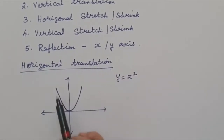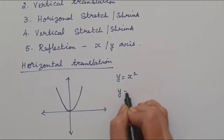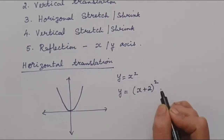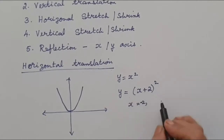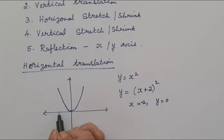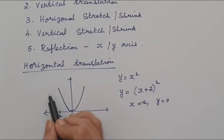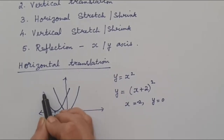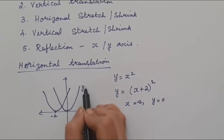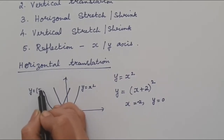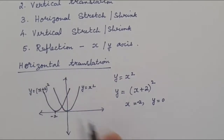The graph of y = x² looks like a standard parabola. For y = (x+2)², when we take our value of x as -2, the y value will become 0. So our graph shifts to negative 2. The shape of the graph remains the same, but this is the graph of y = (x+2)², shifted to the left.